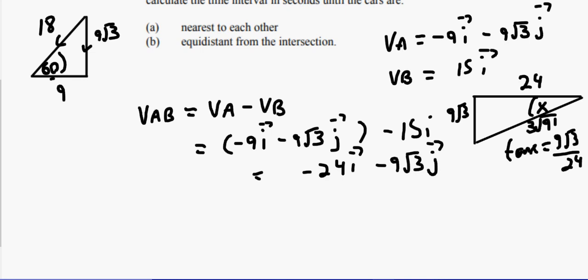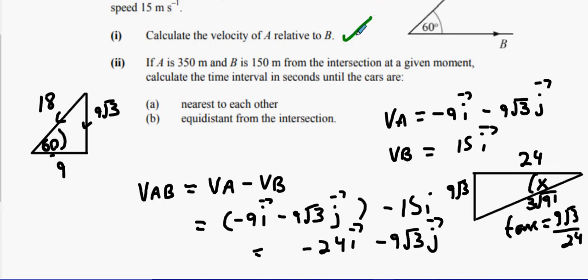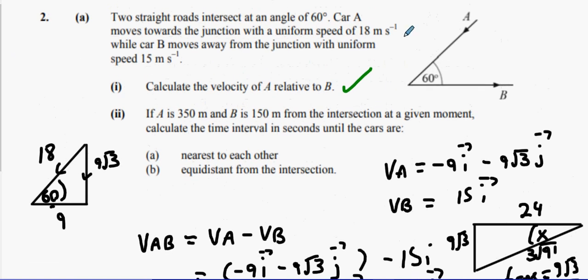Let's see what's happening here. So we've answered part 1, we're happy with that. A is 350 meters, and B is 150. At a given moment, calculate the time interval in seconds until the cars are nearest to each other, equidistant from each other.